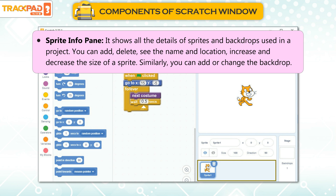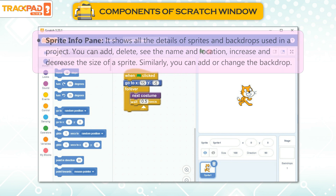Sprite Info Pane: It shows all the details of sprites and backdrops used in a project. You can add, delete, see the name and location, and increase and decrease the size of a sprite. Similarly, you can add or change the backdrop.